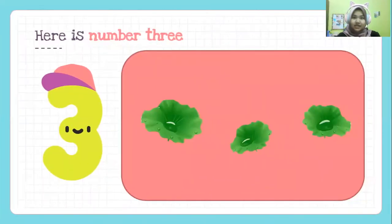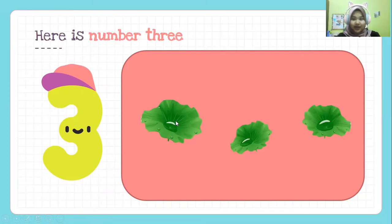Next, here is number three. Number three. How many leaves can you see? One, two, three. Three leaves represent number three.